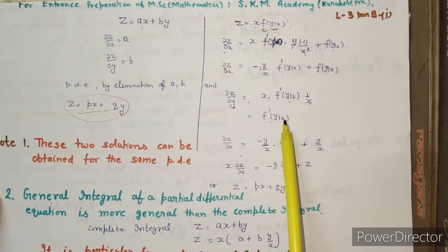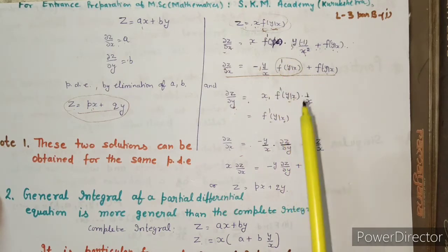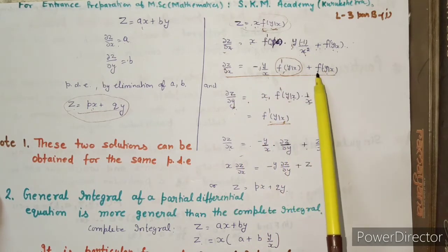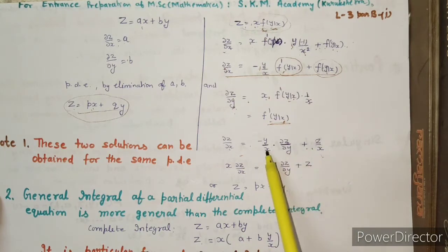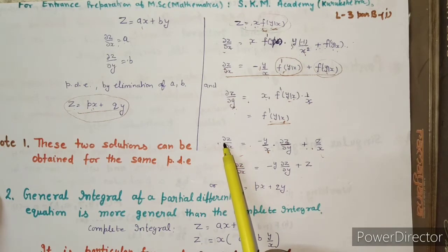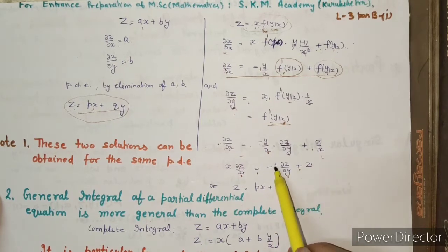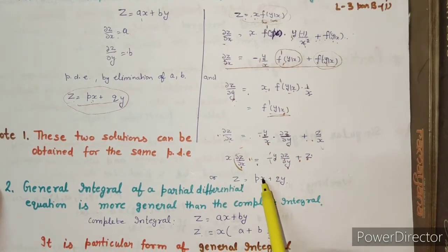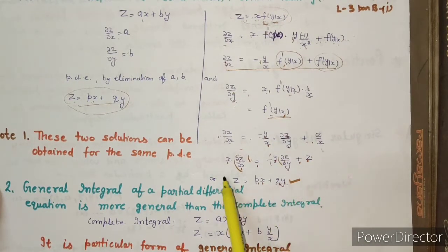Going back, curly z by curly x equals minus y/x² times f dash(y/x). Now in place of f dash(y/x), use the value obtained from curly z by curly y, which gives f of y/x equals z/x. Working this out and taking LCM, multiplying the equation by x, we obtain: x times curly z by curly x equals minus y times curly z by curly y plus z. Bringing terms to the left-hand side: z equals p times x plus q times y, where p = curly z/curly x and q = curly z/curly y. So we have derived z = px + qy.